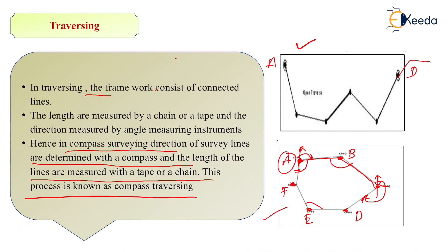So in open traversing we calculate deflection angles, while in closed traverse we calculate interior angles. This is one another difference between them.